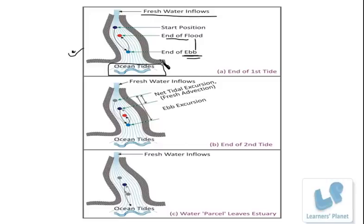Phase lag is something which depends upon the type of estuary. The peak tidal discharge often occurs at different times relative to local high and low waters at the same location. This is called phase lag time — meaning there is some time period between the occurrence of high and low waters, but it is not harmful.